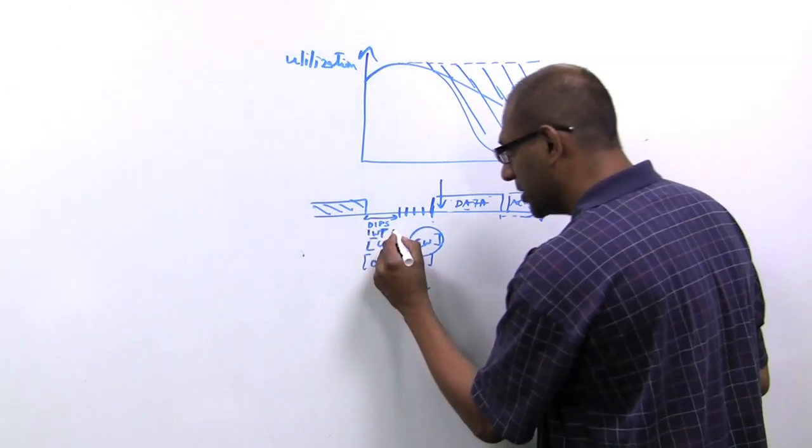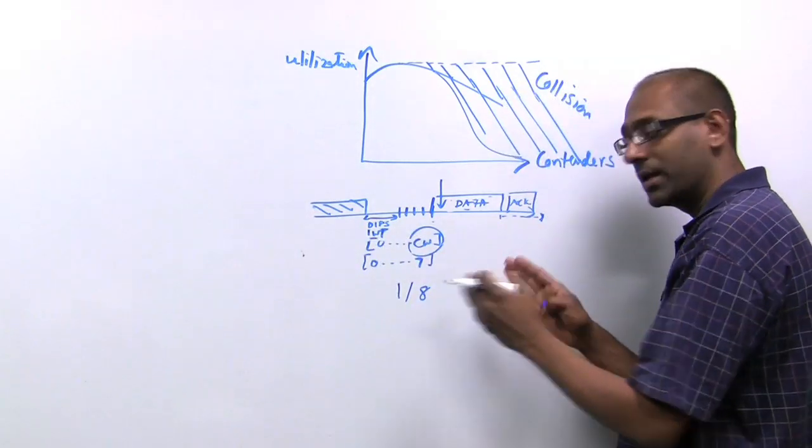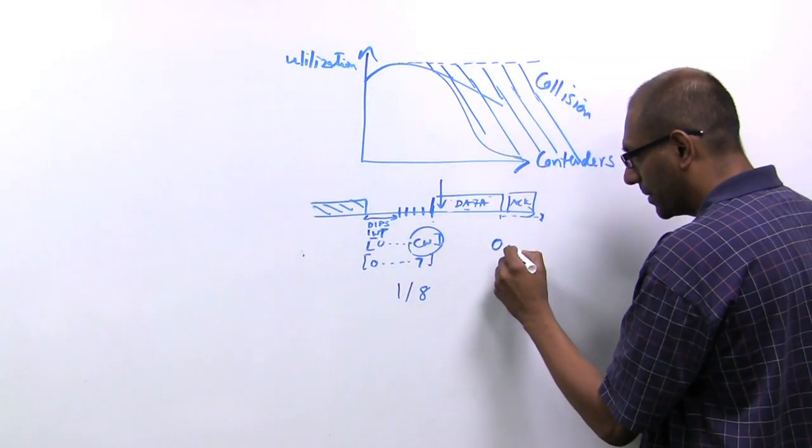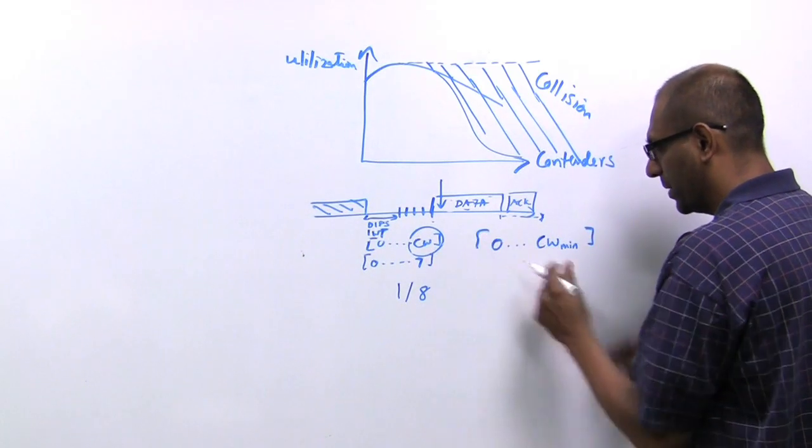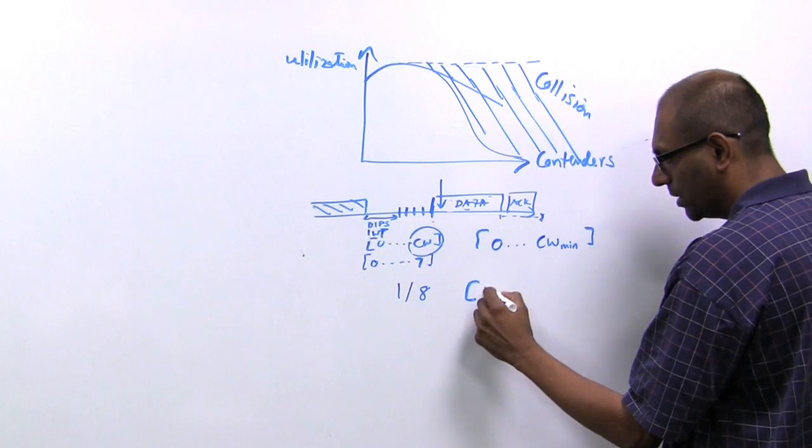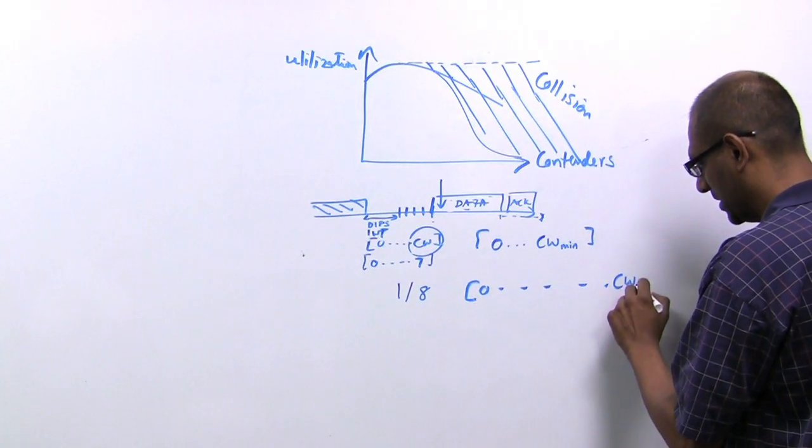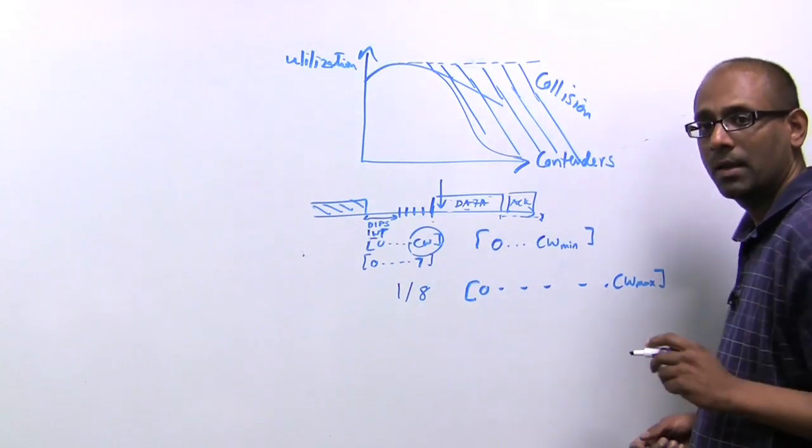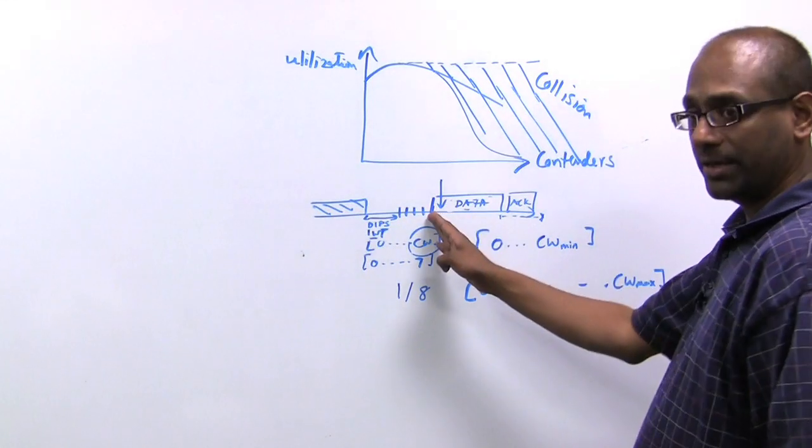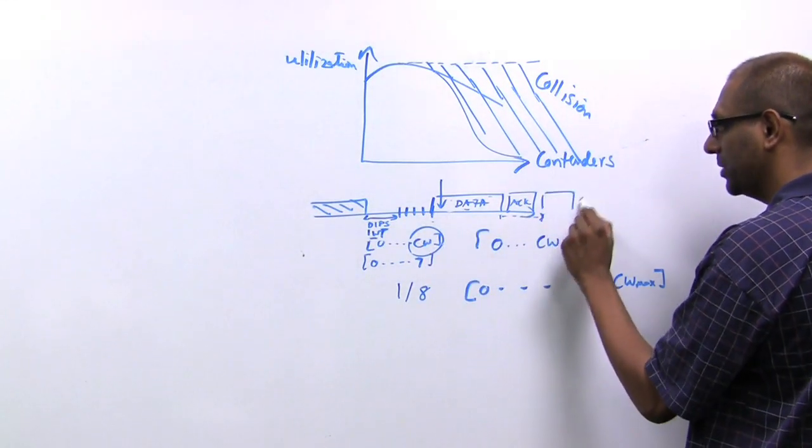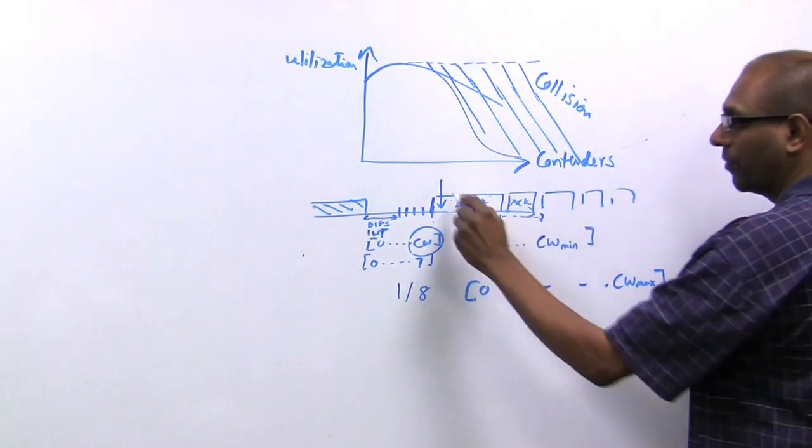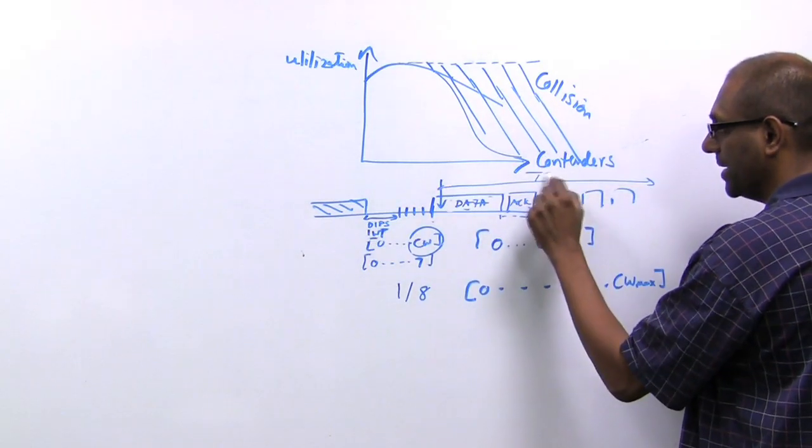So once you pick this initial wait time, you pick a randomized value between 0 to contention window minimum. And for every subsequent retry, you double this to the point where you reach 0 to CW max. And once you succeed with WMM, you might not just transmit one frame, you might actually transmit a sequence of frames for a length of time that is called TXOP.